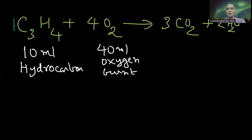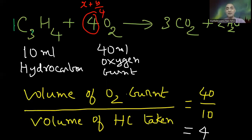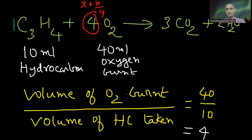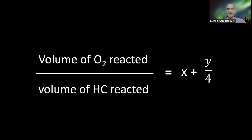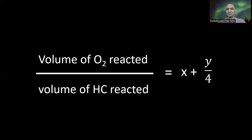Volume of hydrocarbon, volume of oxygen to compare. Volume of oxygen burnt is X plus Y by 4. Take 40 by the 10 ml. What do you get? 4. 4 indicates what? X plus Y by 4. So, volume of oxygen burnt by volume of hydrocarbon taken is equal to X plus Y by 4. These are the two equations.